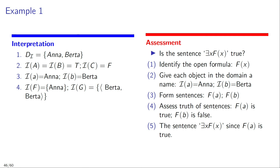Let's look at an example. Suppose we want to assess the truth of the sentence 'there is an x which is F' relative to the interpretation described on the left hand side. Our domain includes Anna and Burda. The name A refers to Anna and the name B refers to Burda. The predicate F includes only Anna in its extension, so it applies to only Anna and not to Burda. The predicate G is a two-place predicate that applies to the ordered pair consisting of Burda as first member and Burda as second member.